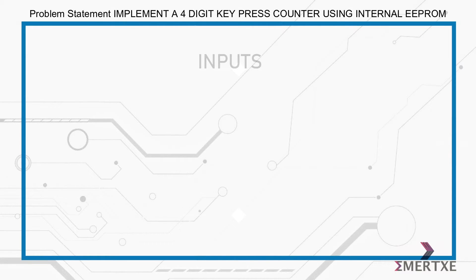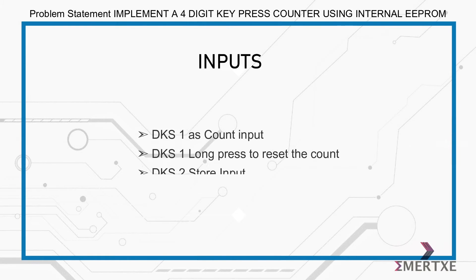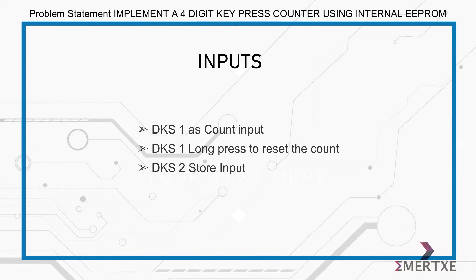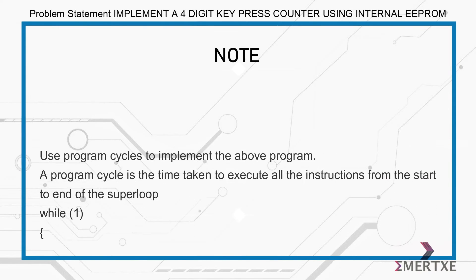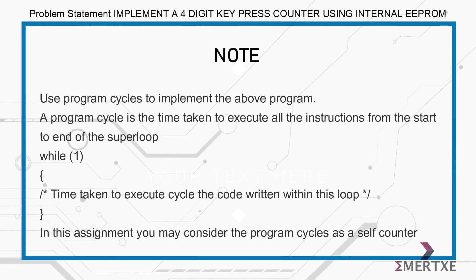The inputs for this assignment are DKS1 as count input, DKS1 long press to reset the count, and DKS2 as store input. Please note that you have to use program cycles to implement the above program. A program cycle is the time taken to execute all the instructions from the start to the end of the super loop. In this assignment, you may consider the program cycles as a self-counter.